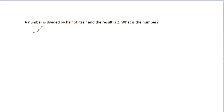So the first thing we have to do is to let the number be x. Alright, so a number which is x is divided by half of itself. So half of itself, which is half of the number, which is half of x, and the result is equal to 2.